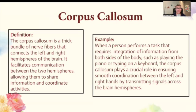Corpus callosum. The corpus callosum is a thick bundle of nerve fibers that connect the left and right hemispheres of the brain. It facilitates communication between those two hemispheres, allowing them to share information and coordinate activities. For example, when a person performs a task that requires integration of information from both sides of the body, such as playing the piano or typing on a keyboard, the corpus callosum plays a crucial role in ensuring smooth coordination between the left and right hands by transmitting signals across the brain hemispheres.